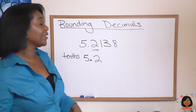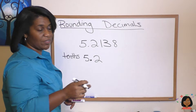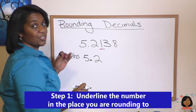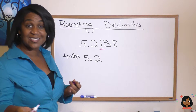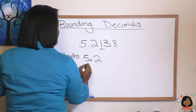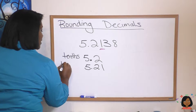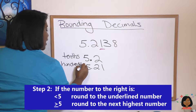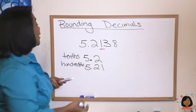Let's try it with another one. Let's round this time to the hundredths place. Highlight the 1, look to the right, we see it's a 3. We know 3 is less than 5, so we're going to keep our 1 and we're going to round to the 5.21, and that's our hundredths place.